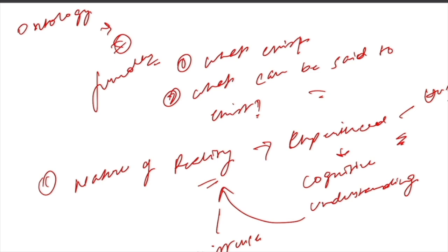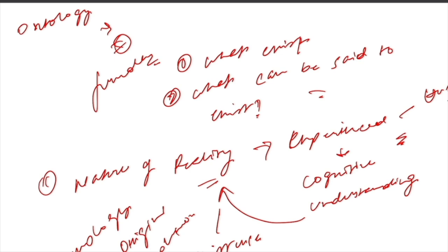Cosmology is the study of the origin, structure, and evolution of the universe, while belief systems refer to the ideas and practices that people use to explain and make sense of the world around them. Anthropologists use ontological analysis to understand how people's beliefs about the nature of reality and the cosmos shape their understanding of themselves, their communities, and their place in the world.